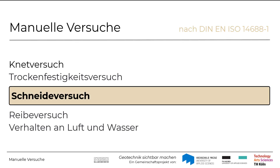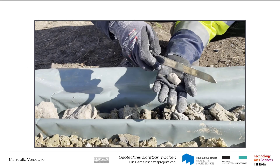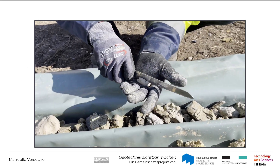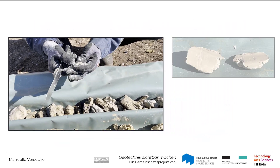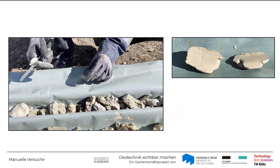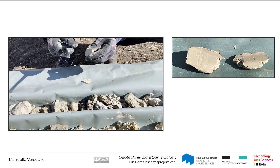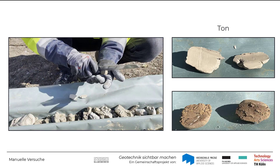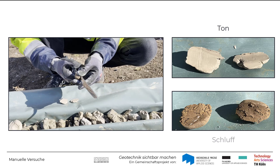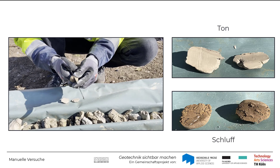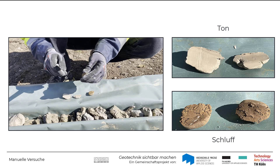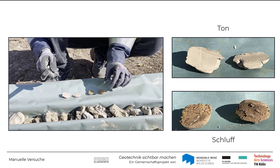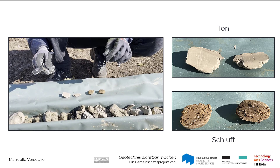Schauen wir uns nun den Schneideversuch an. Im Schneideversuch wird die erdfeuchte Probe mit einem Messer durchgeschnitten. Wenn eine glänzende Schnittfläche entsteht, weist dies auf einen Ton hin. Eine stumpfe Schnittfläche lässt auf einen Schluff bzw. tonig-sandigen Schluff schließen. Man erkennt im direkten Vergleich gut den Unterschied der beiden Schnittflächen.